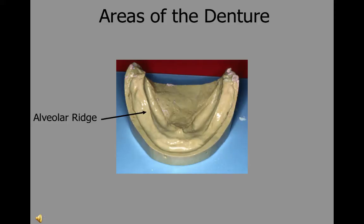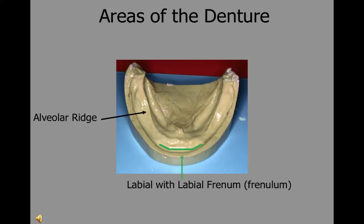When we refer to an area of the complete denture or to the arch, we often call the areas of the denture by the following names. The area from canine to canine we refer to as the labial area of the denture, the most prominent landmark being the labial frenum. As we go posteriorly, we come to an area where we find two frena positioned bilaterally, referred to as the buccal frenum area.